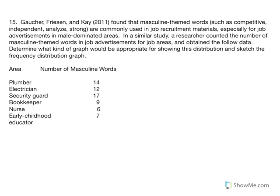Number 15. Researchers found that masculine-themed words such as competitive, independent, analytical, and strong are commonly used in job recruitment materials, especially in male-dominated areas. In a similar study, researchers counted the number of masculine-themed words in job advertisements and obtained the following data. Our first task is to identify the scale of measurement. We consider the x variable — the named job categories — and our options are nominal, ordinal, interval, and ratio.